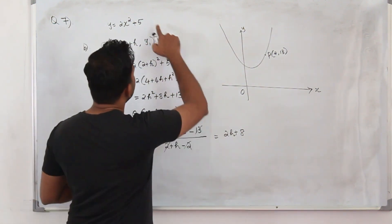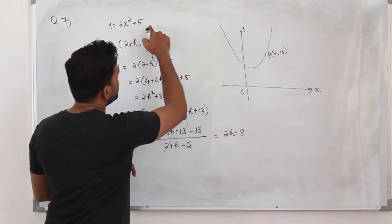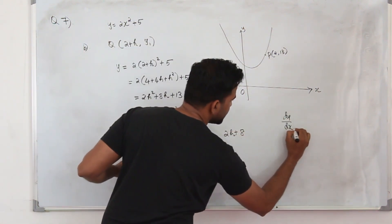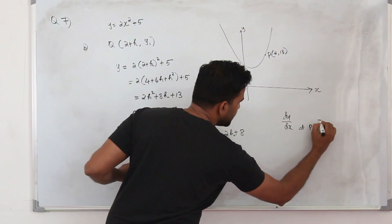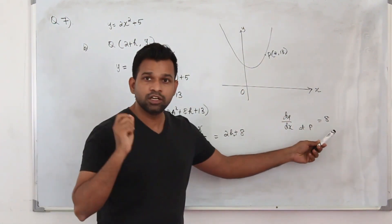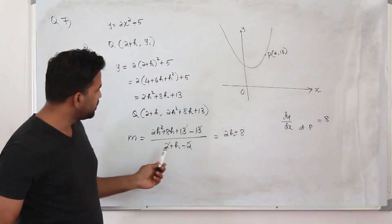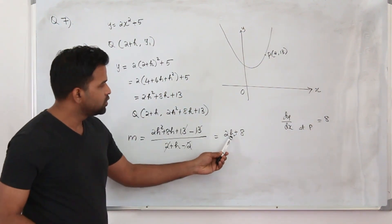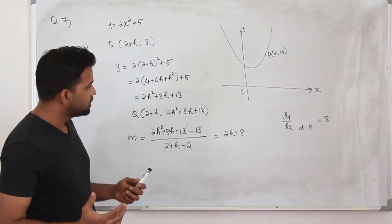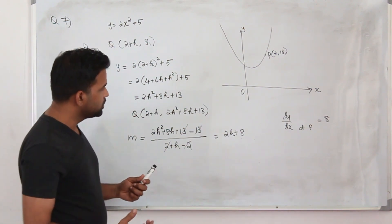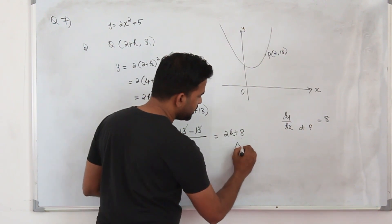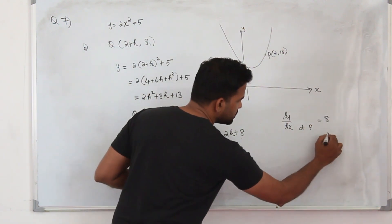The gradient of the function at point P, dy/dx at point P, is 8, which is the answer we got in Part A. And in Part B, the answer is 2h plus 8. They want you to explain the relationship between the answer in Part A and the answer in Part B.